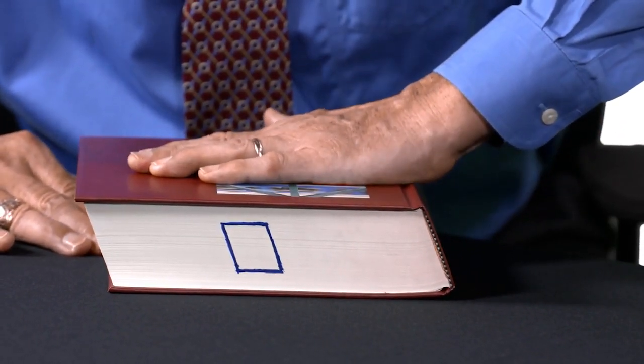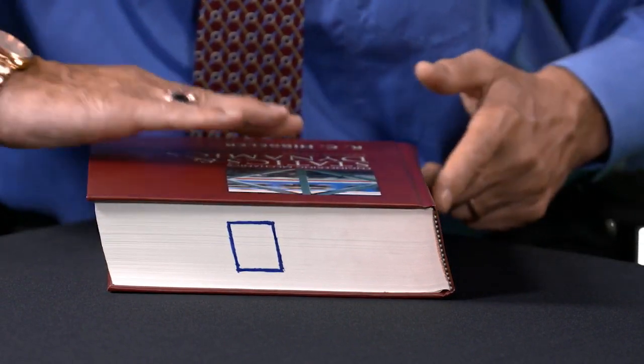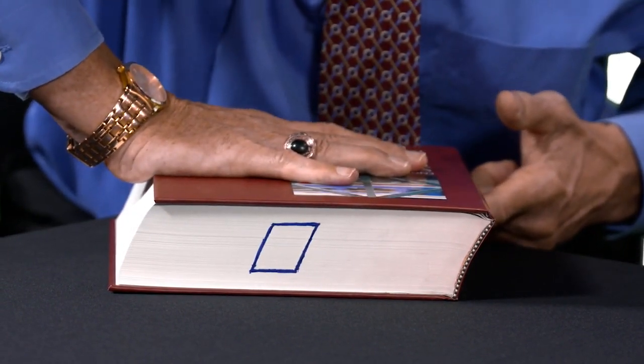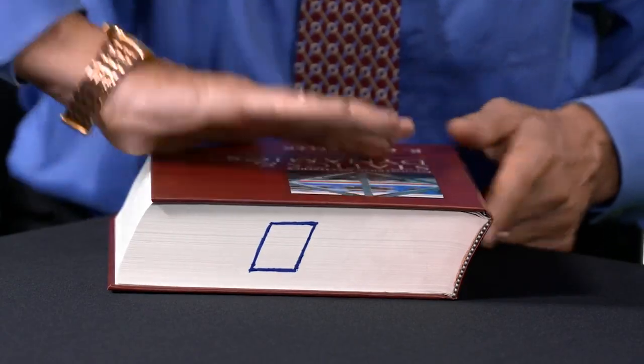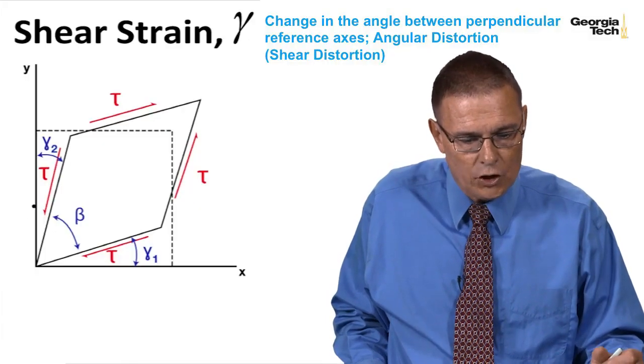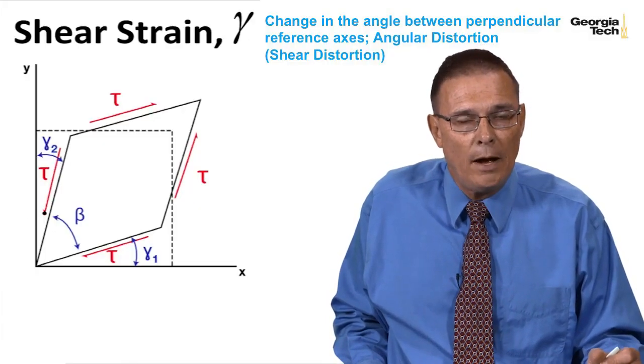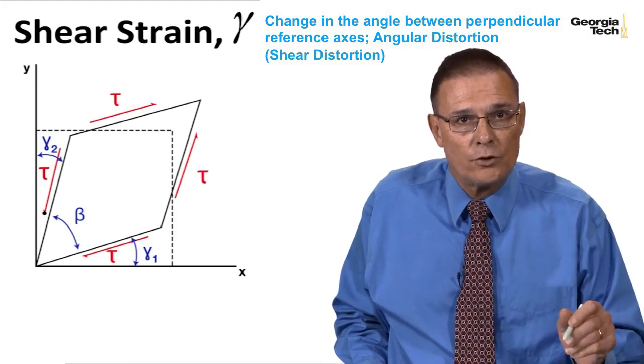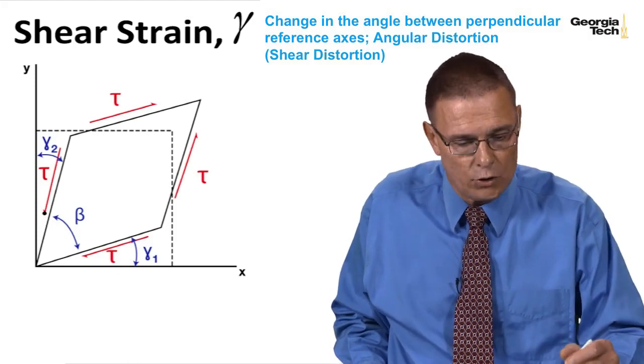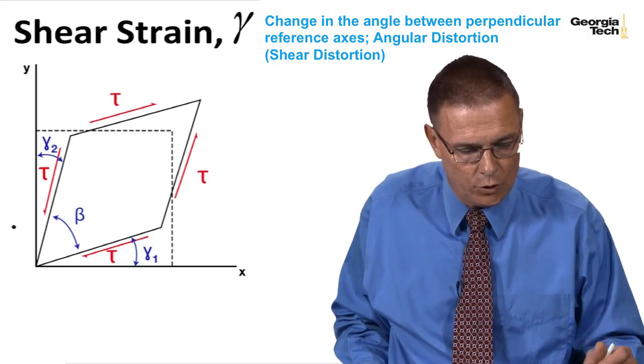And we can see that we get an angular distortion or a shear type, what we're going to call shear strain. So here is a graphic of our shear strain. We saw when we applied shear forces on our stress block, we got an angular distortion or a shear distortion.